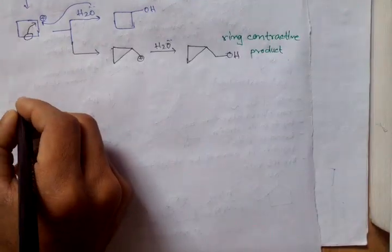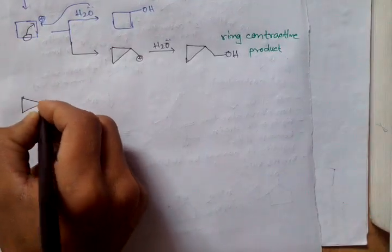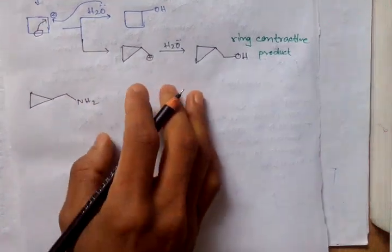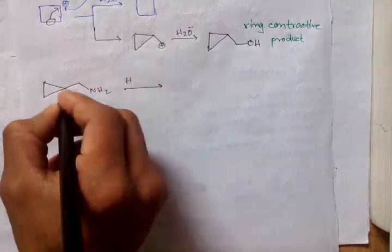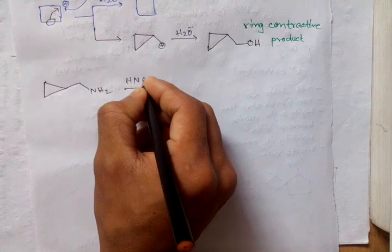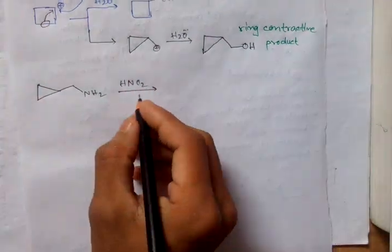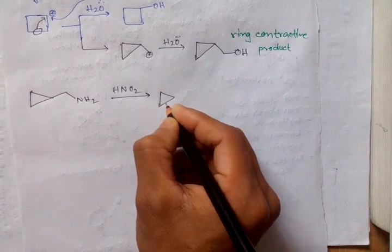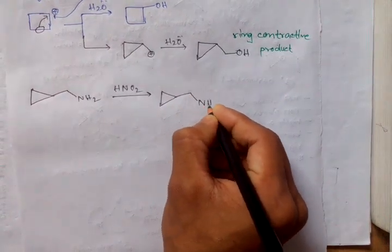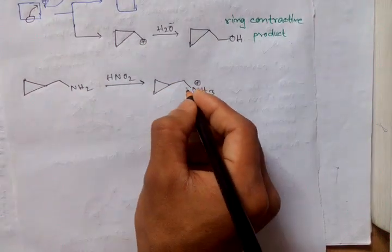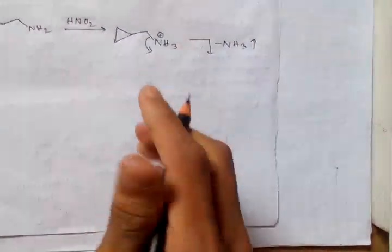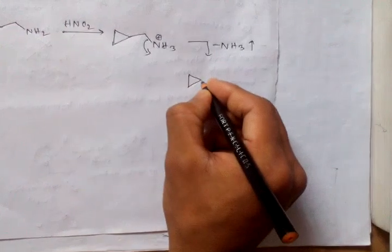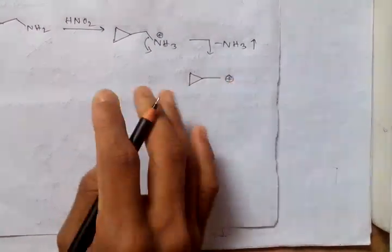For this system, here it is also a primary amine. When this primary amine is treated with nitrous acid, it forms ammonium gas. This ammonium is removed as gas and we get an intermediate like that.